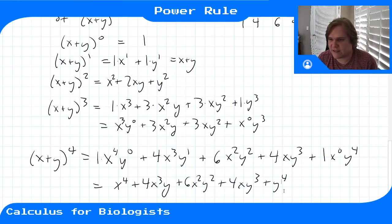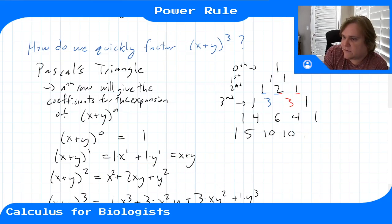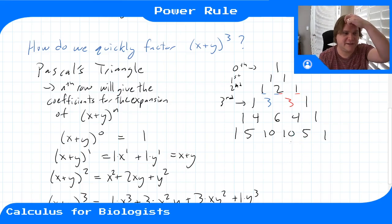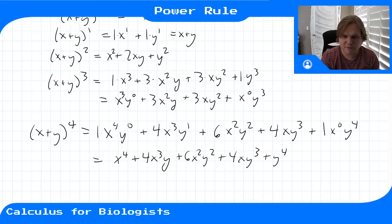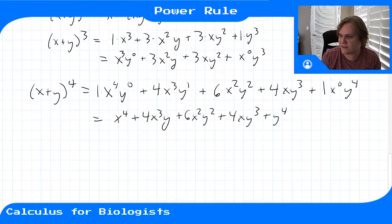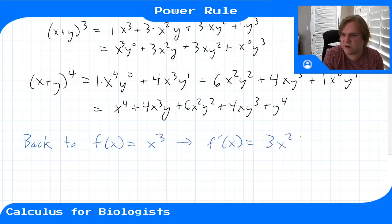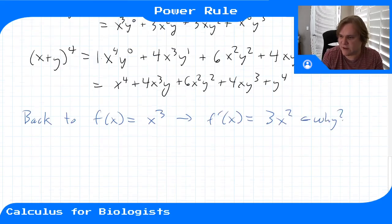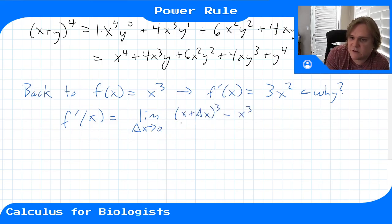This is how you factor out for basically any power you want — you just build another row of your triangle. So if we wanted to do the fifth, you'd get one, five, ten, ten, five, one for the coefficients. But let's go back to our problem: f of x equals x cubed, f prime of x equals 3x squared, and we're trying to show why. So f prime of x is equal to the limit as delta x goes to zero of x plus delta x cubed minus x cubed, all over delta x.